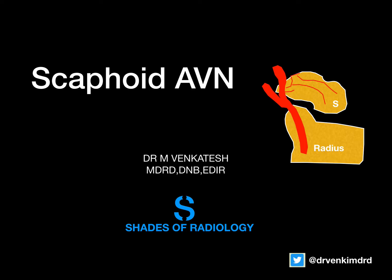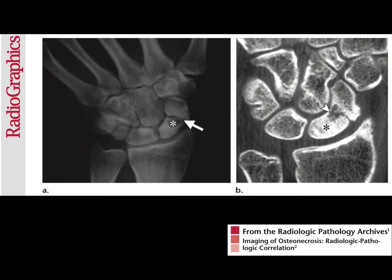Welcome back everyone. Today let us see a very interesting topic which we might encounter very commonly, but I chose this to make a video because of this peculiar scaphoid blood supply. This is a classic case of fracture of the waist of the scaphoid. You can see the sclerosis of the proximal portion and the irregularity as well. You can also see the CT scan showing the same, which is going for avascular necrosis.